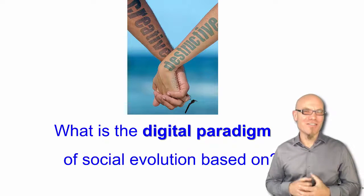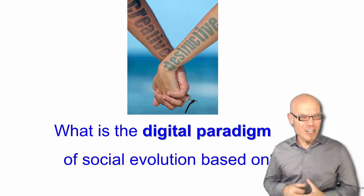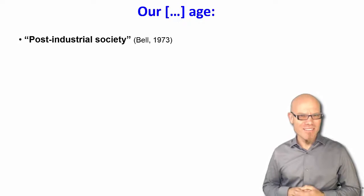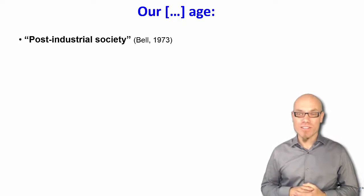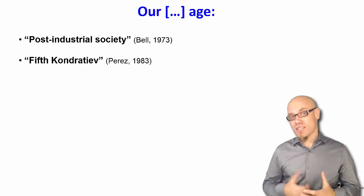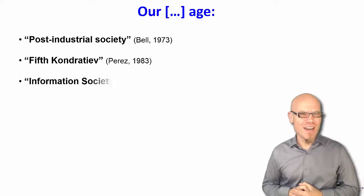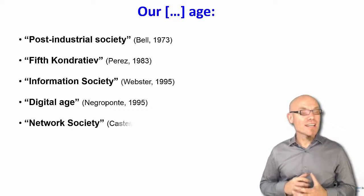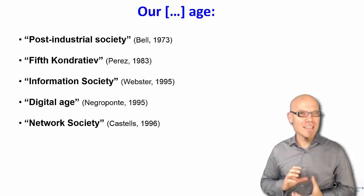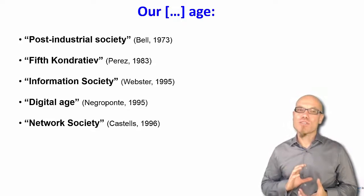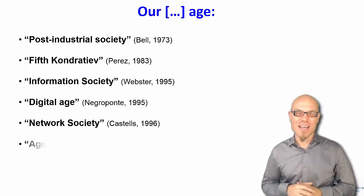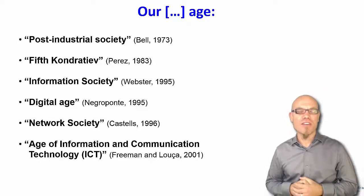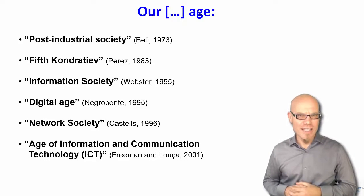Let's talk about the foundation of the current digital paradigm. Our current age has been given many names. As early as the early 70s, Bell talked about the post-industrial society. Perez, in a theory of long waves, talks about the fifth Kondratieff. The term 'information society' is a term you often hear. The digital age — Castells wrote a very important work explaining the information age in terms of a network logic, so he talks about the network society. And Freeman, who also worked on the long-wave theory, talks about the age of information and communication technology.